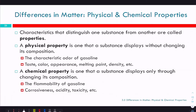Now we're going to talk about some other properties of matter. Characteristics that distinguish one substance from another are called properties. Physical properties are ones that a substance displays without changing its composition. For example, the characteristic odor of gasoline — smelling something is a physical property because smelling it does not change the thing you're smelling. Taste, color, appearance, melting point, and density are all physical properties. You can observe a thing and it doesn't change.